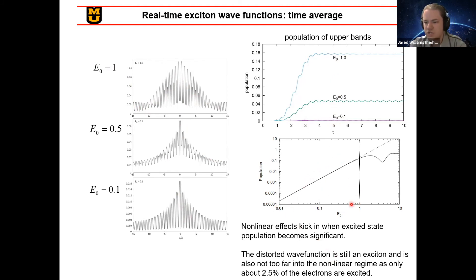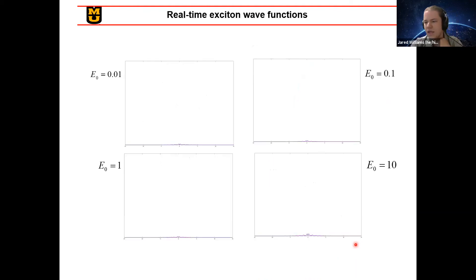And that after you get to about one or so with the electric field strength, the thing becomes totally nonlinear and has this very different type of effect. However, in this regime, we still only have about two and a half percent of the electrons excited. So this is still pretty well within the linear regime.